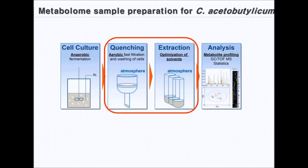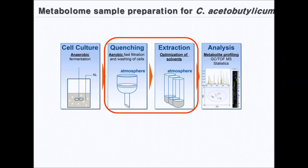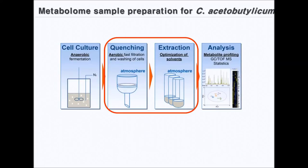Therefore, we systematically evaluated and optimized metabolome sample preparation for Clostridium acetobutylicum, including metabolome sampling under atmospheric or anaerobic conditions, as well as the optimal extraction solvents. Unlike other industrial strains, Clostridium acetobutylicum cannot survive in air as it is a strict anaerobe. Therefore, handling of Clostridium acetobutylicum is normally conducted in an anaerobic chamber, which is a tedious and expensive procedure.